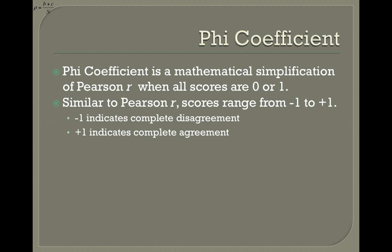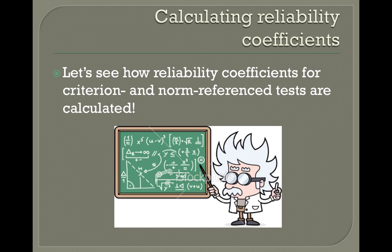The phi coefficient is really just a reminder of Pearson R, where all scores are 0 to 1. Similar to Pearson R because the output ranges from negative 1 to positive 1. Negative 1 indicates complete disagreement — so everyone on test 1 who failed would pass on test 2, and everyone who passed would fail on the second one. A score of positive 1 indicates complete agreement — everyone who failed the first exam failed the second, and whoever passed the first passed the second.